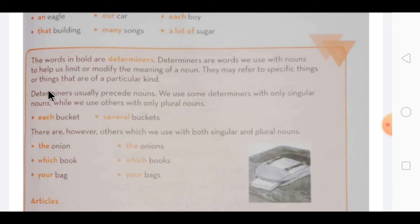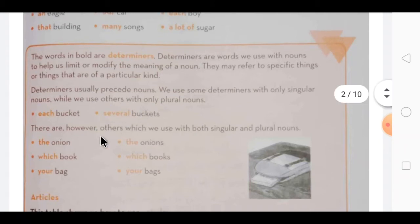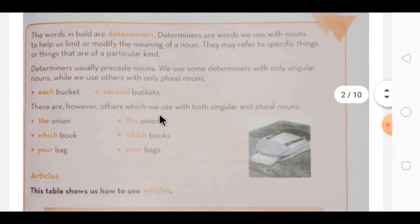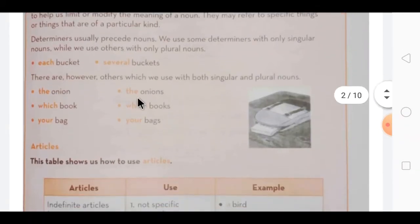Now determiners usually precede nouns. Precede nouns means they always come before nouns. We use some determiners with only singular nouns while we use others with only plural nouns. Then there are however others which we use with both singular and plural nouns.